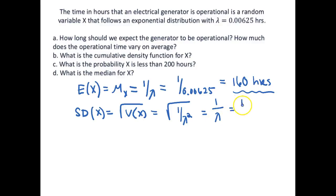So this is equal to 1 over 0.00625 and of course it is the same value as what we got up here, 160 hours. So again this is denoted by sigma X, that is our standard deviation.